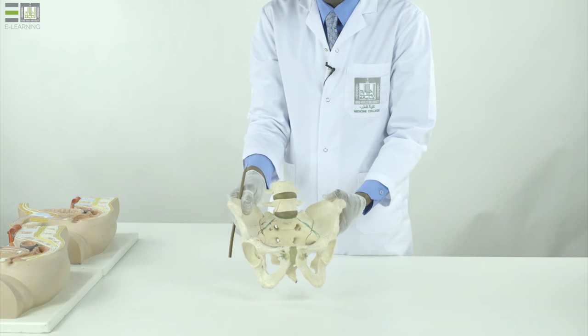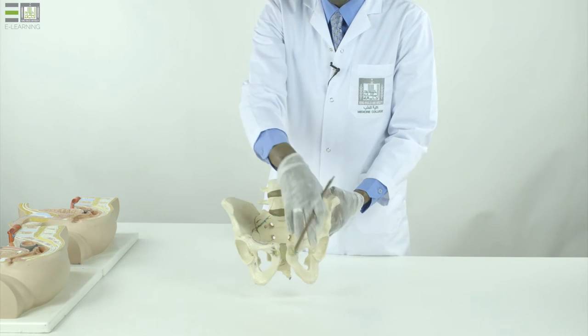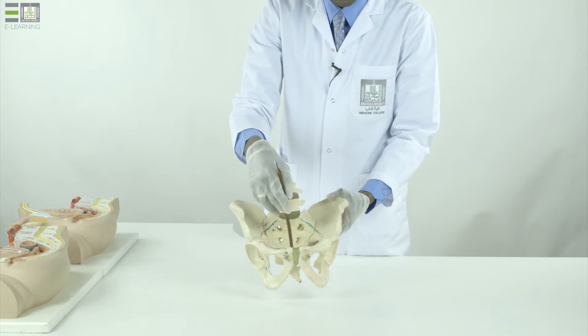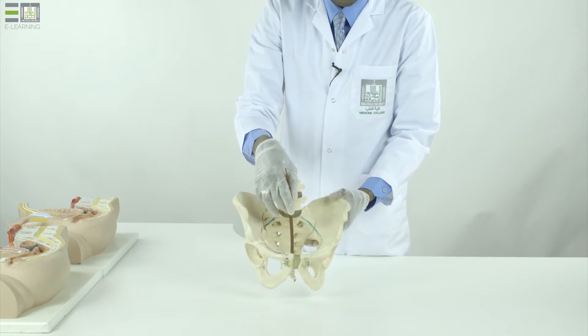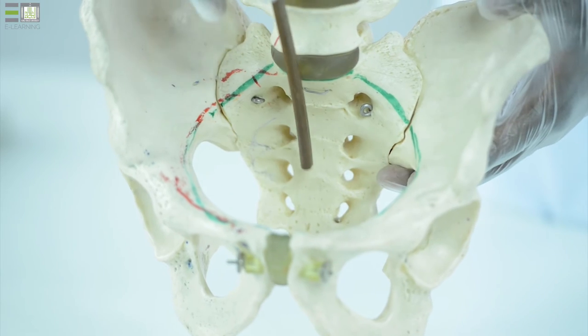This is the bony pelvis. It's formed by the two hip bones on both sides, the sacrum and coccyx in the midline.